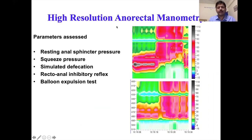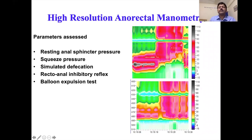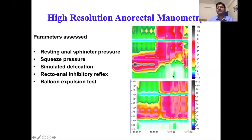Anorectal manometry is a very good test that tells us about the physiology of defecation. On the color plot, the anal sphincter shows high pressure at rest, while the rectum is relaxed. During normal defecation, the anal sphincter relaxes — shown by a change to lower pressure colors — while the rectum contracts, allowing evacuation.